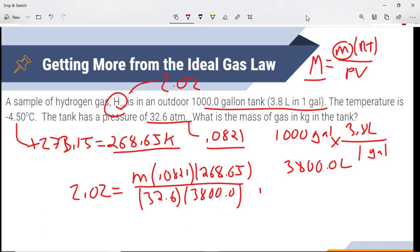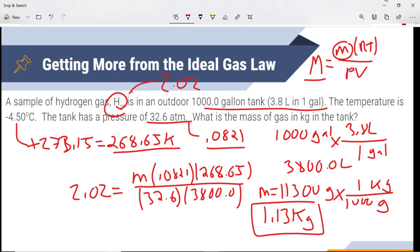We can now algebraically rearrange the equation and solve for M. So what we get for M is 11,300 grams. It does want it in kilograms, so we need to convert. So we get 1.13 kilograms. All right. So again, same concept of PV equals nRT. We can just rearrange some of the values to be able to solve for mass, molar mass, and those types of things. All right. Let's move on.